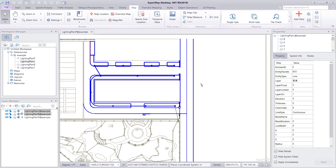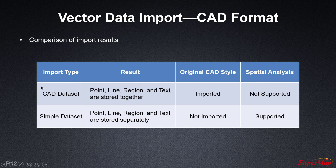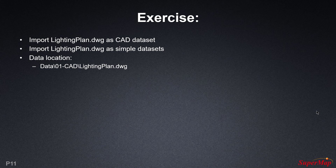Let's summarize the differences between these two import types. With a CAD dataset import, the point, line, region, and text datasets are stored together, whereas with a simple dataset import they are stored separately. The CAD dataset type imports the original CAD style, while the simple dataset type does not. Finally, the CAD dataset import type does not support spatial analysis, while the simple dataset import type does. Please go ahead and repeat what we just did before continuing.